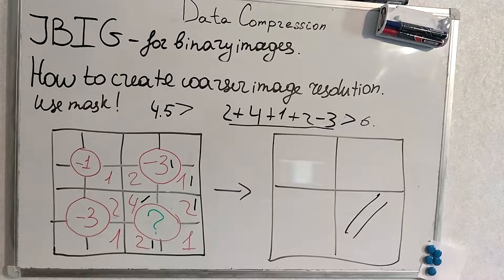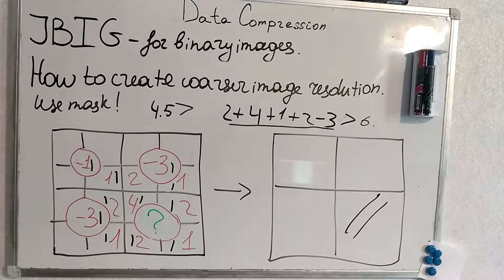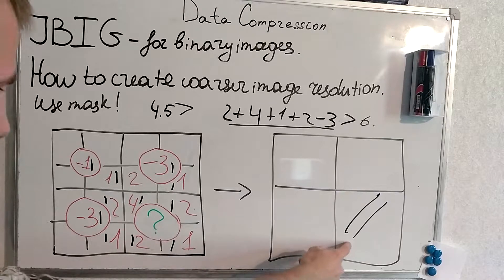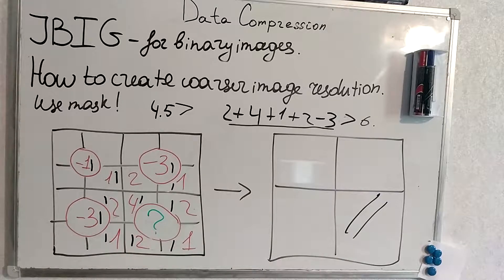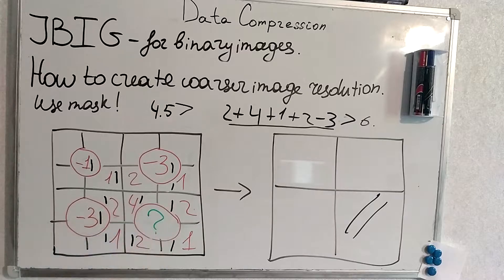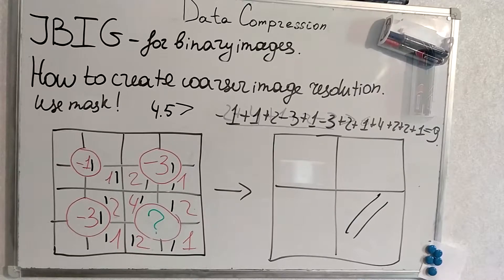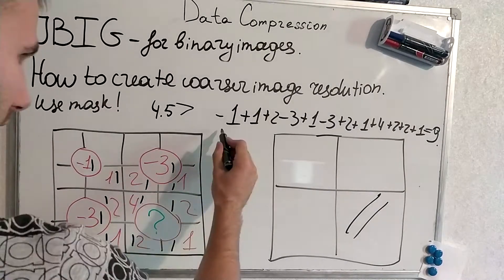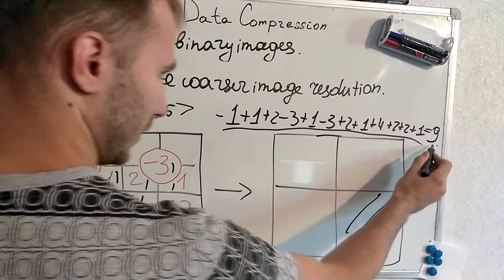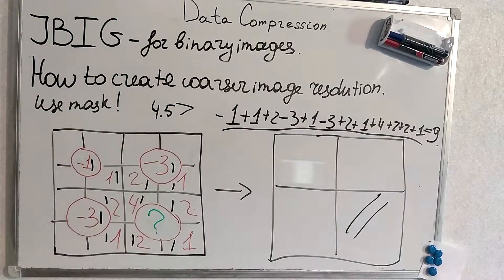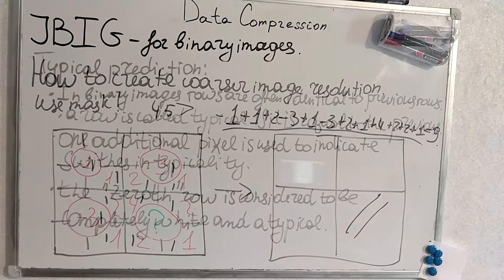Try to calculate another one. Tell me if this pixel is black if all of the pixels that take part in the sum are black. The pixel will be black because 9 is bigger than 4.5.